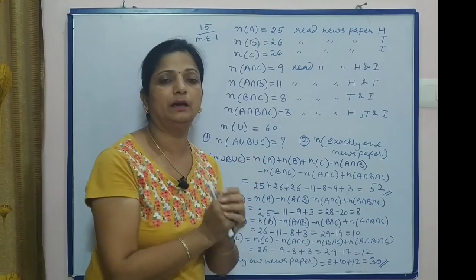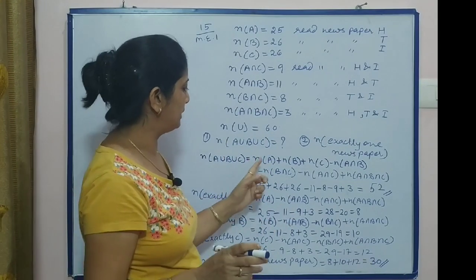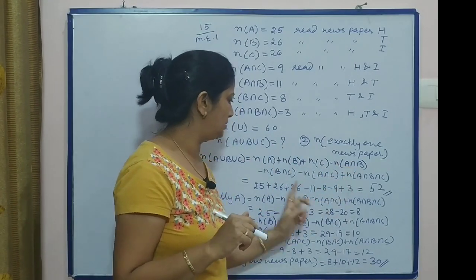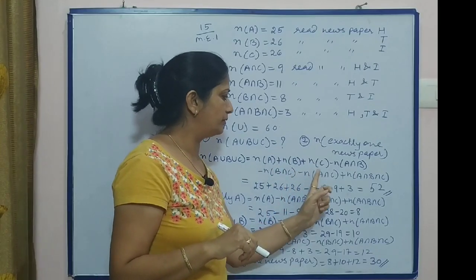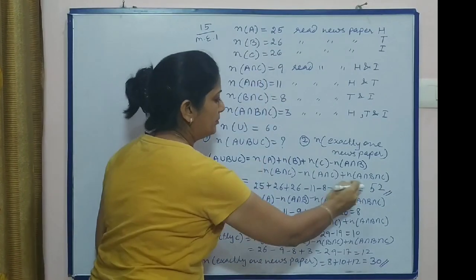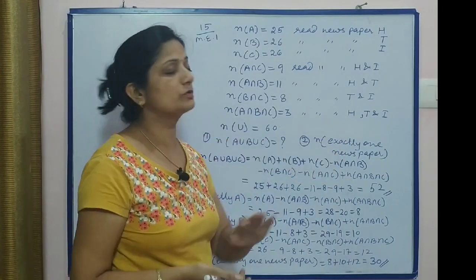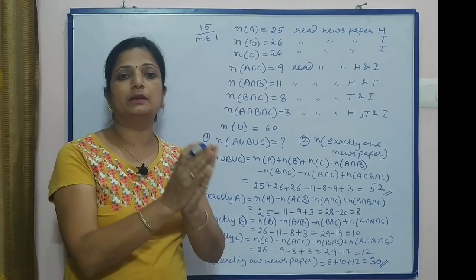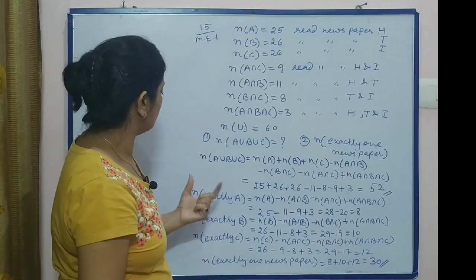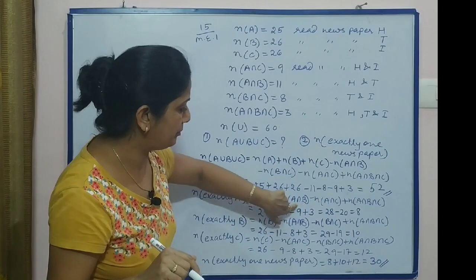To find 'at least one newspaper', that means A union B union C. We apply the formula: n(A) + n(B) + n(C) - n(A∩B) - n(B∩C) - n(A∩C) + n(A∩B∩C). We substitute all values and simplify. For the second part — exactly one newspaper — we find only A, only B, and only C separately, then add all three together.